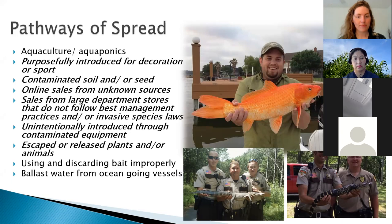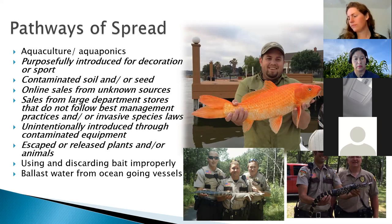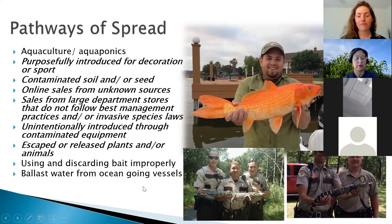Ballast water from ocean-going vessels is another pathway. Those huge ships that come to Duluth carrying big cargo loads sometimes need to balance out the weight of the cargo by adding water. Up until about 2006, there were actually no regulations on where that water came from. They were coming from Europe with fresh water, all the way to Duluth Harbor, dumping it out when they dropped off their cargo. That's how we got a large majority of aquatic invasive species in the Duluth area — zebra mussels, spiny water flea, gobies, all from unchecked ballast water.